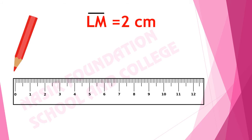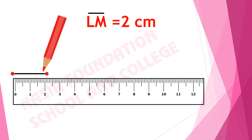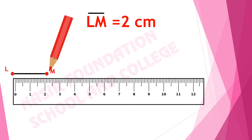Now we have to draw line segment LM of two centimeter. To draw a line segment, we place the scale and mark a starting point at zero centimeter. We will mark another point at two centimeter, and then we will join it with the help of a pencil. This is the line segment of two centimeter. We will mark the starting point as L and ending point as M. Now we have drawn line segment LM of two centimeter.